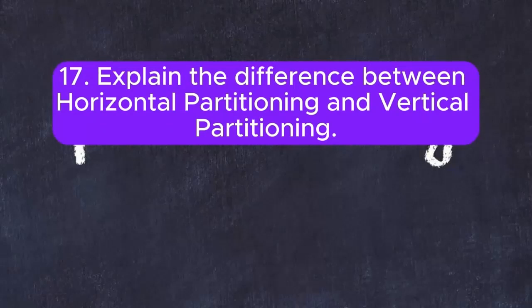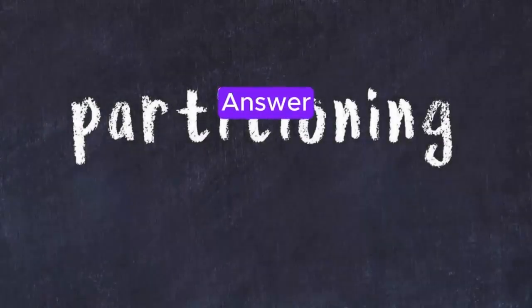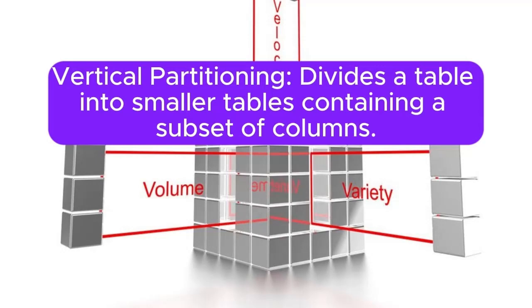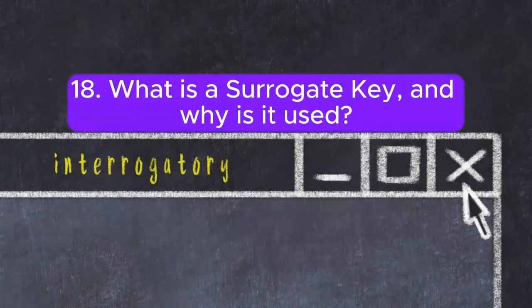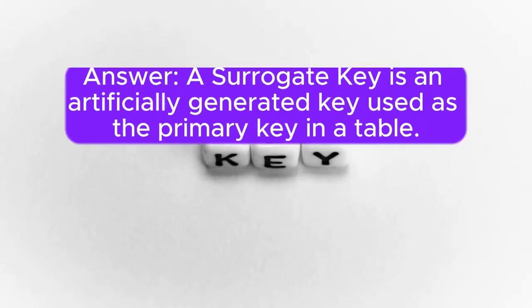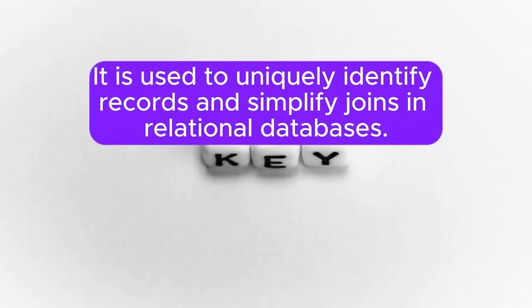17. Explain the difference between horizontal partitioning and vertical partitioning. Answer: Horizontal partitioning divides a table into smaller tables containing the same columns but with subsets of rows. Vertical partitioning divides a table into smaller tables containing a subset of columns. 18. What is a surrogate key, and why is it used? Answer: A surrogate key is an artificially generated key used as the primary key in a table. It is used to uniquely identify records and simplify joins in relational databases.